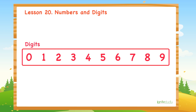So we have 10 digits altogether. They are 0, 1, 2, 3, 4, 5, 6, 7, 8, 9. These digits are the foundation to form any numbers.